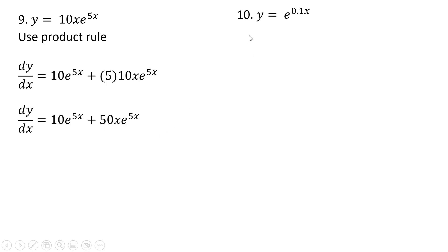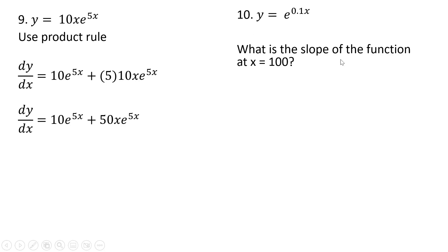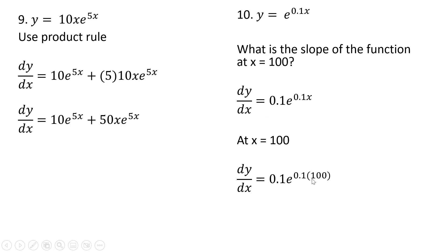Number 10: what is the slope of the function at x equals 100? To find that, we're going to take the derivative — a derivative is a slope function. And now evaluating that derivative where x equals 100, plugging 100 into that function, and simplifying, we get a little over 2,200 as the slope when x equals 100.